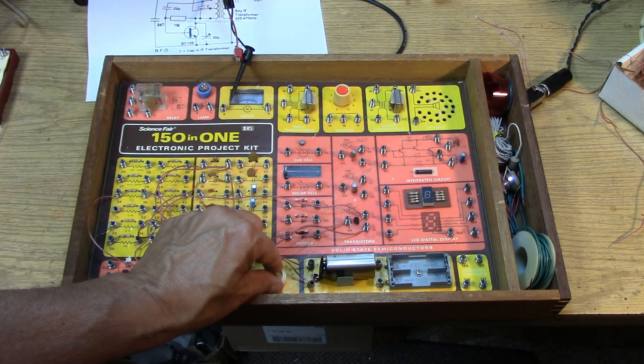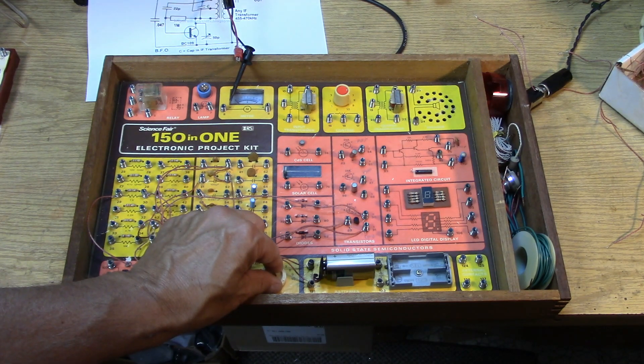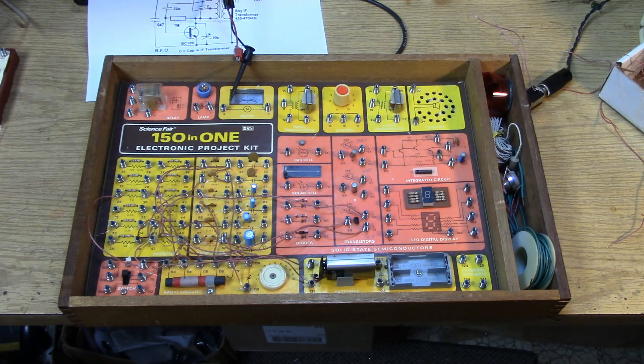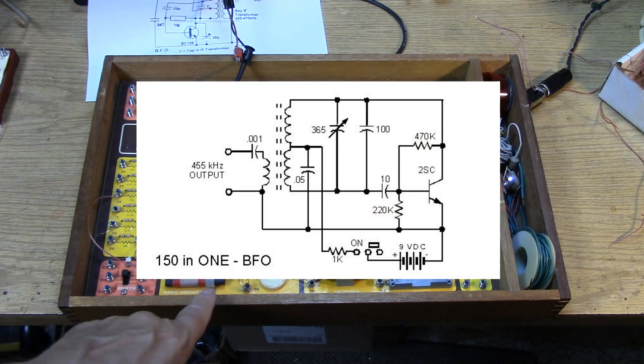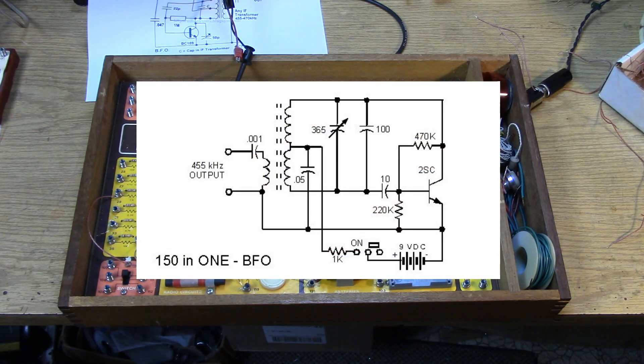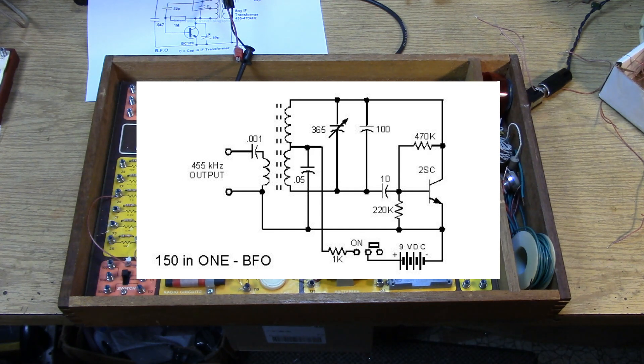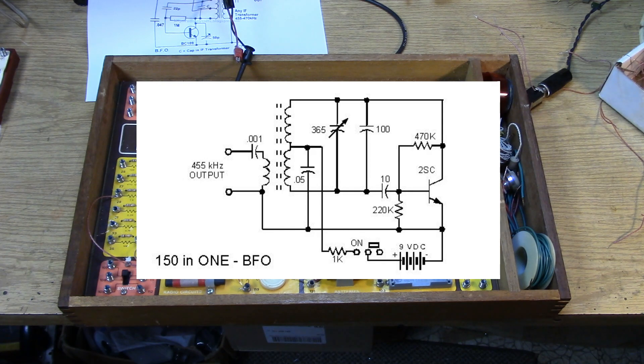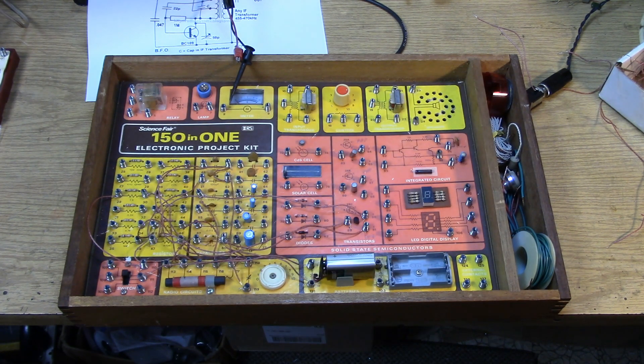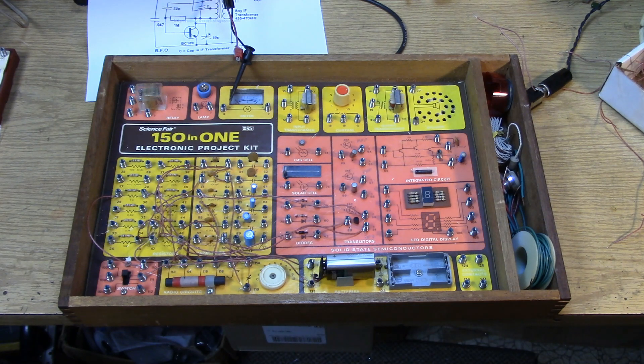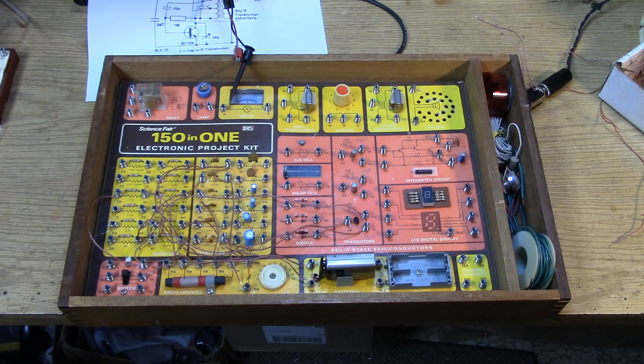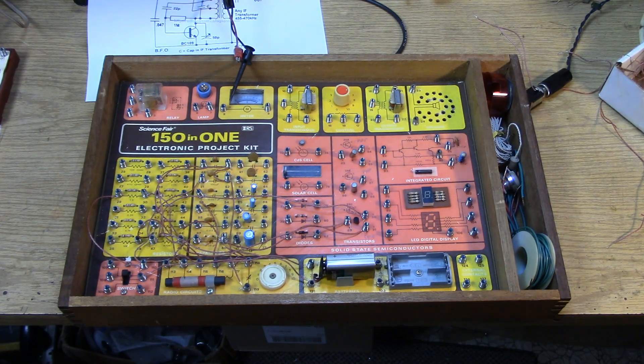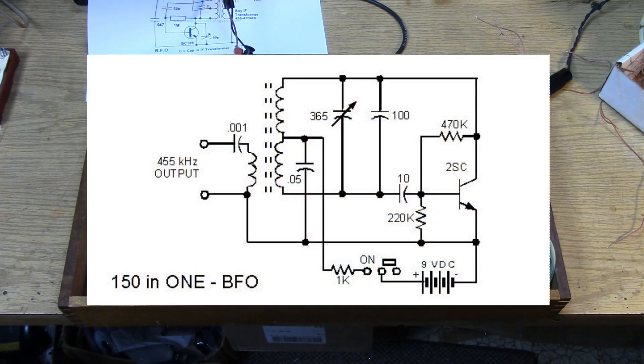Now it tunes pretty fast, of course. But once set, you would not be touching that again. We're using the secondary of the tuning coil as the output. So it's a nice low impedance output. And I've got a .001 or 1,000 puff coupling capacitor off the coupling link that should go right in to feed almost any kind of product detector.